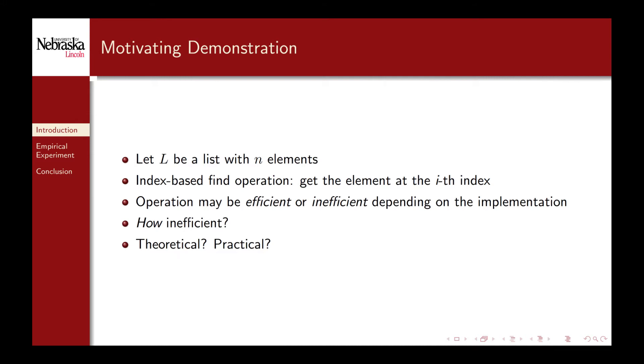Recall that one of the fundamental operations on our list was an index-based retrieval method. This operation may be efficient or inefficient depending on the list implementation. However, how do we quantify this? How efficient is it? How inefficient is it? Should we approach this question from a theoretical point of view or from a practical one?